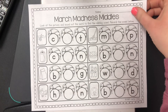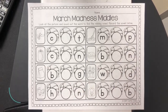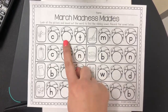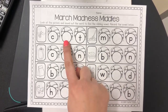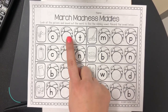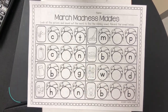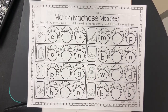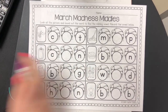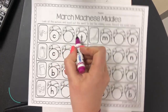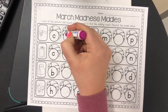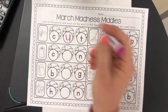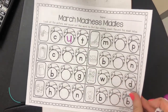On Tuesday you're going to do the March Madness middles. Each of these words is missing the middle letter, so you're going to put the letter in where it goes — for example, 'cut'.